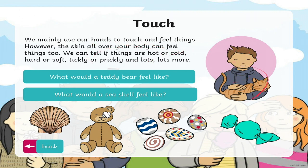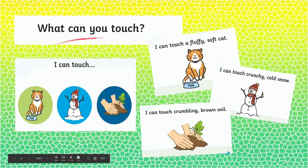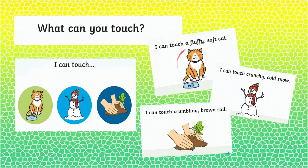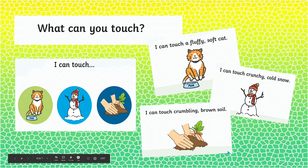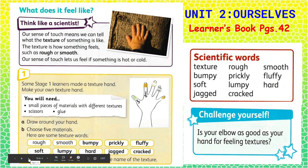It covers and protects everything inside the body and helps keep our bodies at the right temperature. We mainly use our hands to touch and feel things; however, the skin all over your body can feel things too. Can you see these pictures? This is a cat — I can touch a fluffy soft cat. I can touch crunchy cold snow. I can touch crumbling brown soil. Our sense of touch means we can tell what the texture of something is like. The texture is how something feels, such as rough or smooth. Our sense of touch also lets us feel if something is hot or cold.